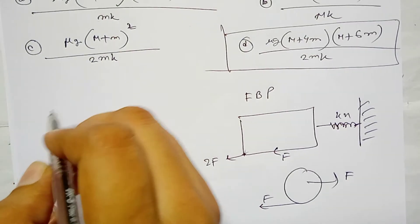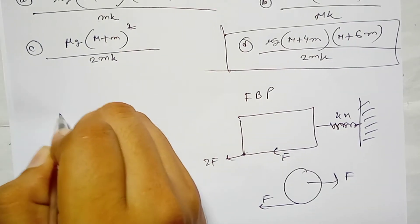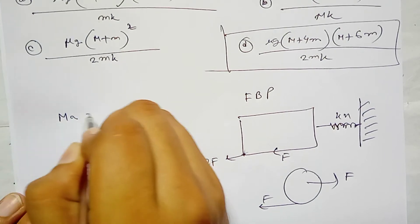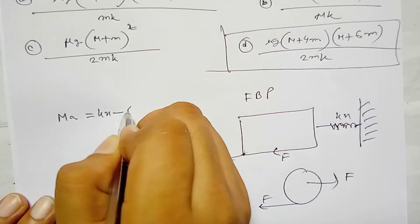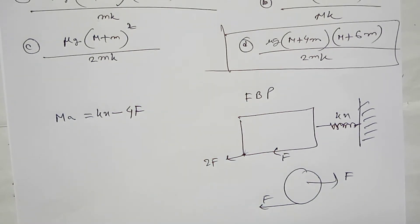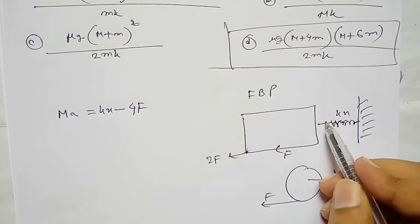This is the free body diagram. Ma equals KX minus 4F. For four wheels, this is the force 4F, and this is KX. KX is in this direction.